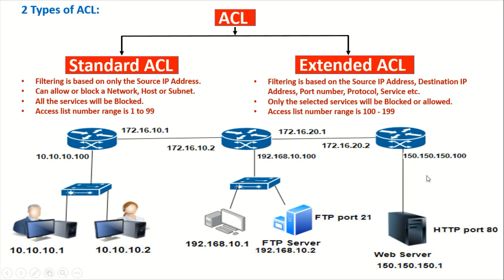Unless we explicitly write a rule to allow the HTTPS application, it will be denied. This is extended ACL. The main difference: in standard ACL, rules are written based only on the source IP address — permitting or denying traffic is common to all services. In extended ACL, we can write rules based on source address, destination address, port number, protocol, service, and so on.